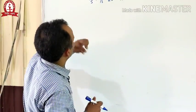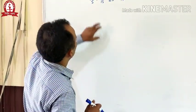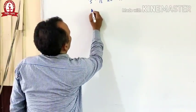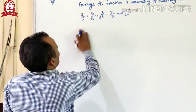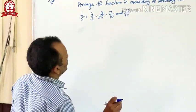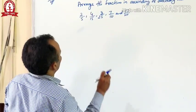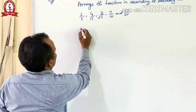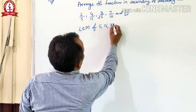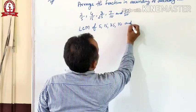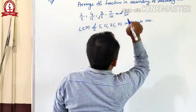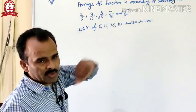So how can we change these fractions into like fractions? First of all, observe the denominators — the denominators are 5, 15, 25, 10, and 20. You should find out the LCM. The LCM of 5, 15, 25, 10, and 20 is 100.